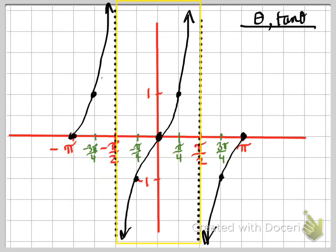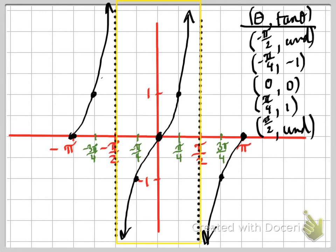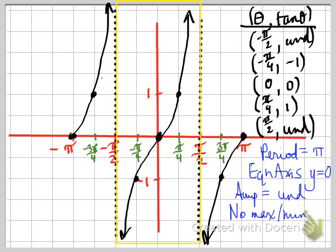From -π/2 to π/2, so that we include the asymptote at the beginning and the end. The period is π, equation of the axis, y = 0, the amplitude is undefined, and there's no max or min. Running out of time, let's go on to the next video. See you soon.